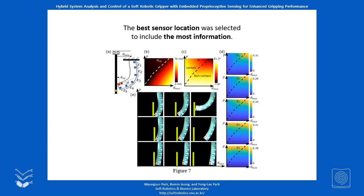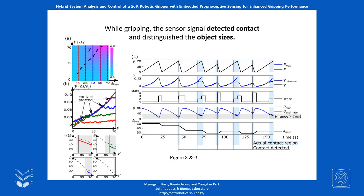To estimate the object's size and detect whether the contact occurred, we found a sensor location that includes the most information and embedded a sensor there to measure the strain. The embedded sensor was able to detect the contact and estimate the object's size and the end effector's orientation.